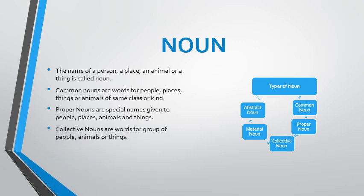Now let's move on to collective noun. Collective nouns are words for a group of people, animals, and things. When we refer to a group, we give it a collective noun. For example: an army of soldiers, a herd of sheep. We covered many examples in the last session, so you can watch that video again to memorize them.